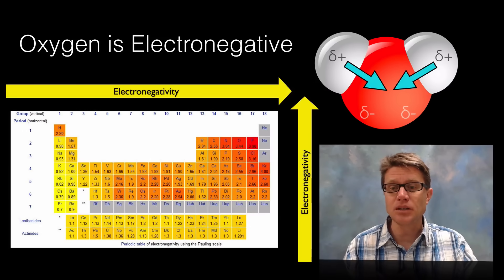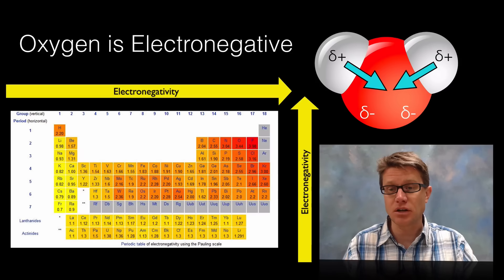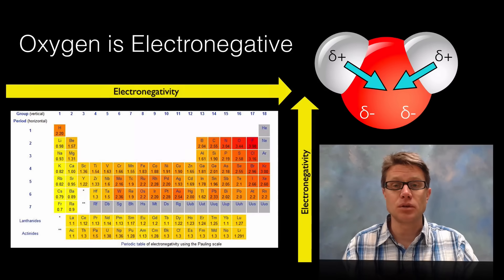It's pulling the electrons of hydrogen closer to it. What you get is a partial positive and a partial negative charge. In other words, the oxygen is always going to be negative and then the hydrogen is always going to be positive.